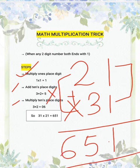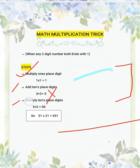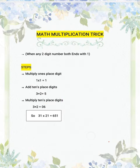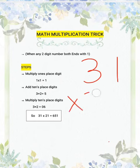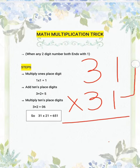Let's see one more sum. Suppose you have 31 into 31. So as we discussed, first step is multiply its ones place digit. 1 into 1 gives you 1.